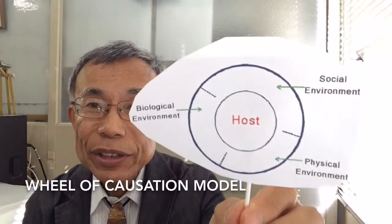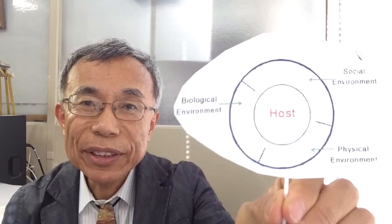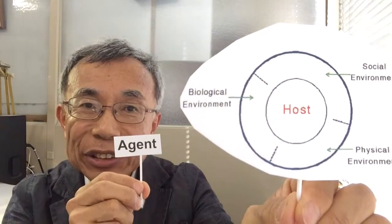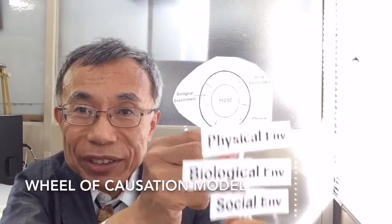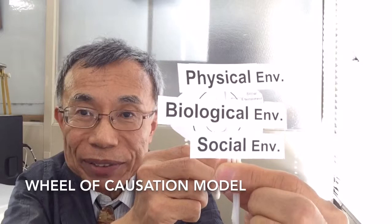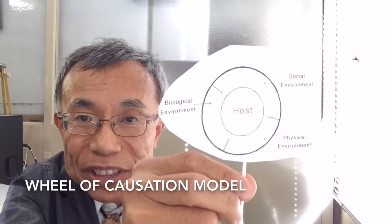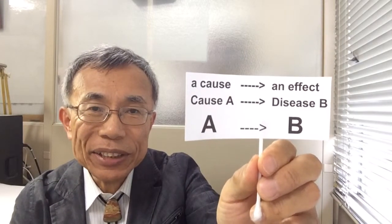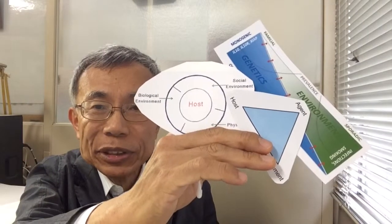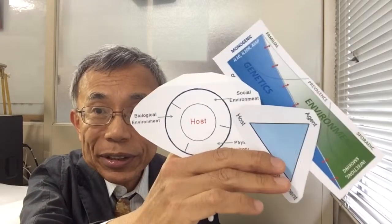Next, the Wheel of Causation Model. This model de-emphasized the agent as the sole cause of disease. Instead, it emphasizes the interaction of physical, biological, and social environments, representing the overlapping nature of various environments. It also brings genetics into the mix. Even if the final epidemiologic hypothesis you adopted takes a simplified format such as A causes B, multiple causality models are always useful to reflect the meaning of your study in complex real-world situations.